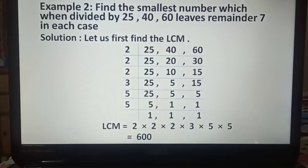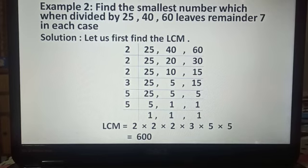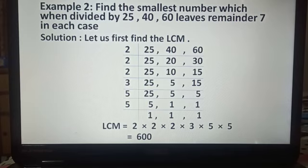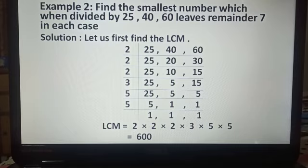Divide the numbers by the common prime factors of one or more numbers. 25 is not divisible by the prime number 2, so we write it as it is. 40 is divisible by 2, giving us 20. 60 is divisible by 2, giving us 30. Repeating: 25 is not divisible by 2; 20 is divisible by 2, giving us 10; 30 is divisible by 2, giving us 15.